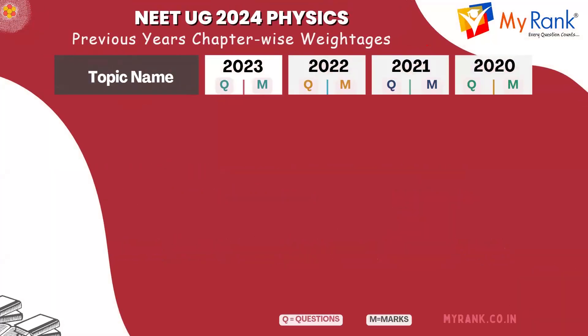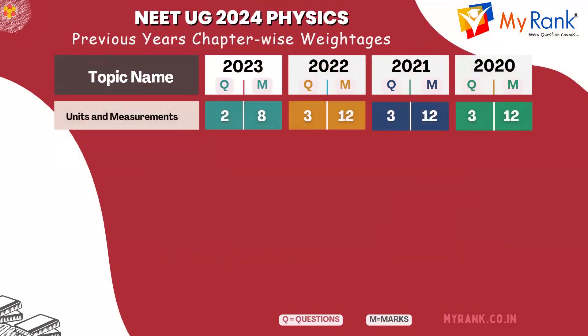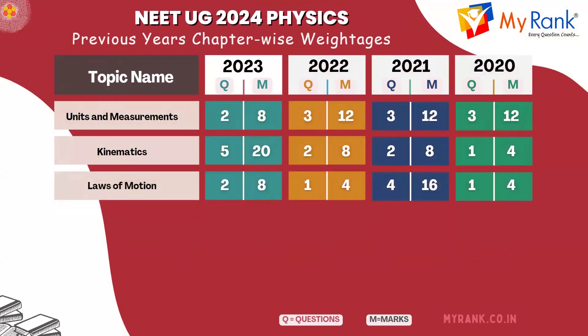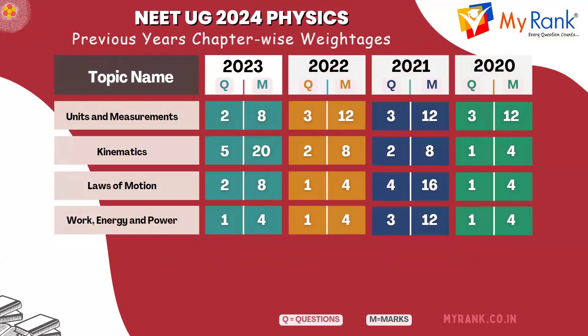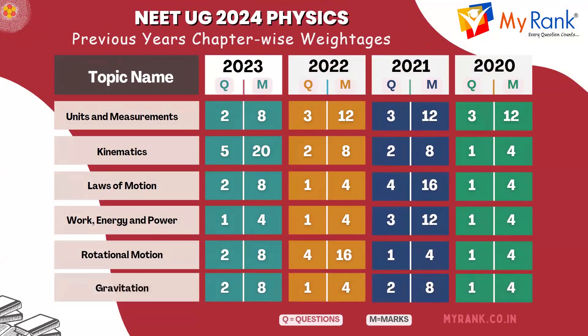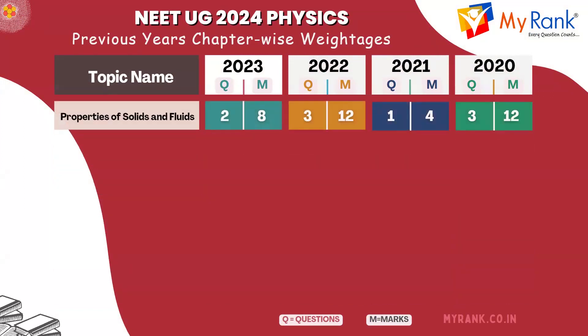Here are the chapter-wise weightages for each topic: Units and Measurements, Kinematics, Laws of Motion, Work, Energy and Power, Rotational Motion, and Gravitation.